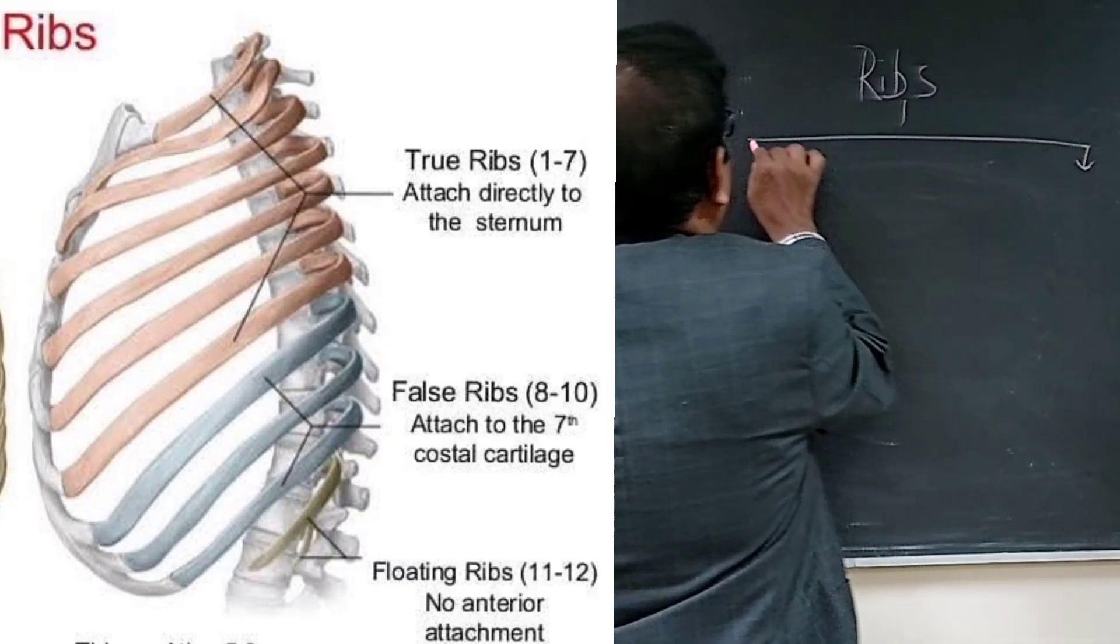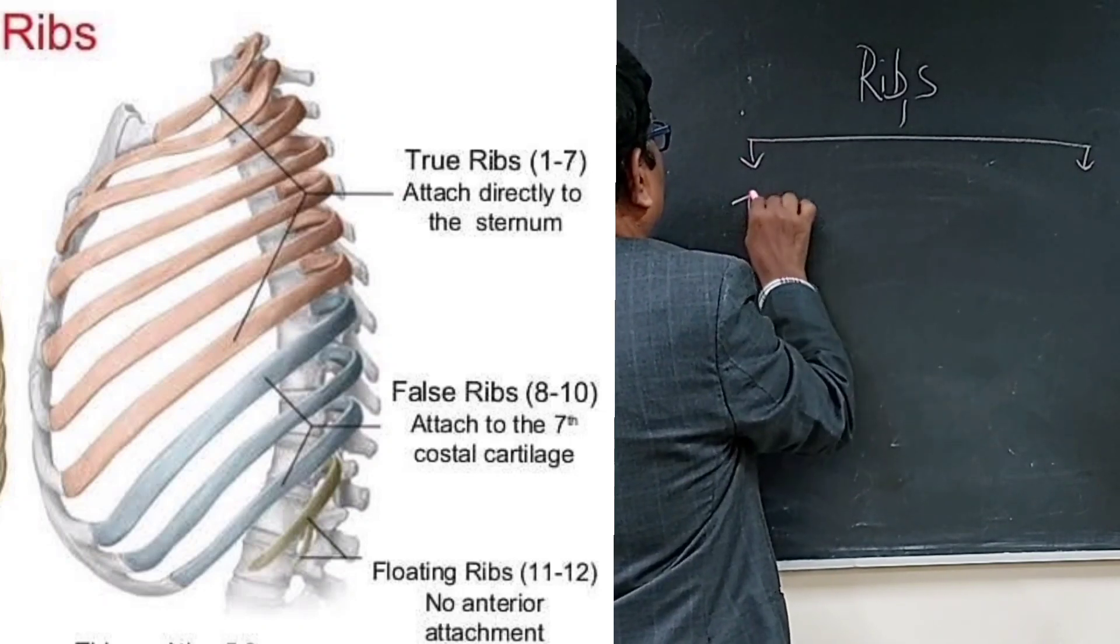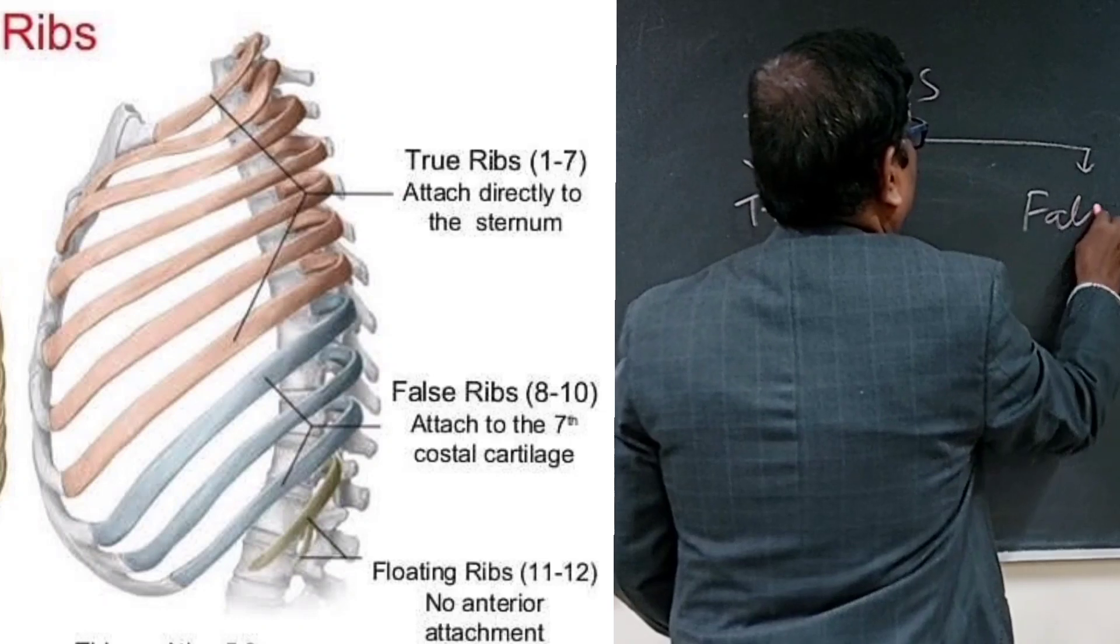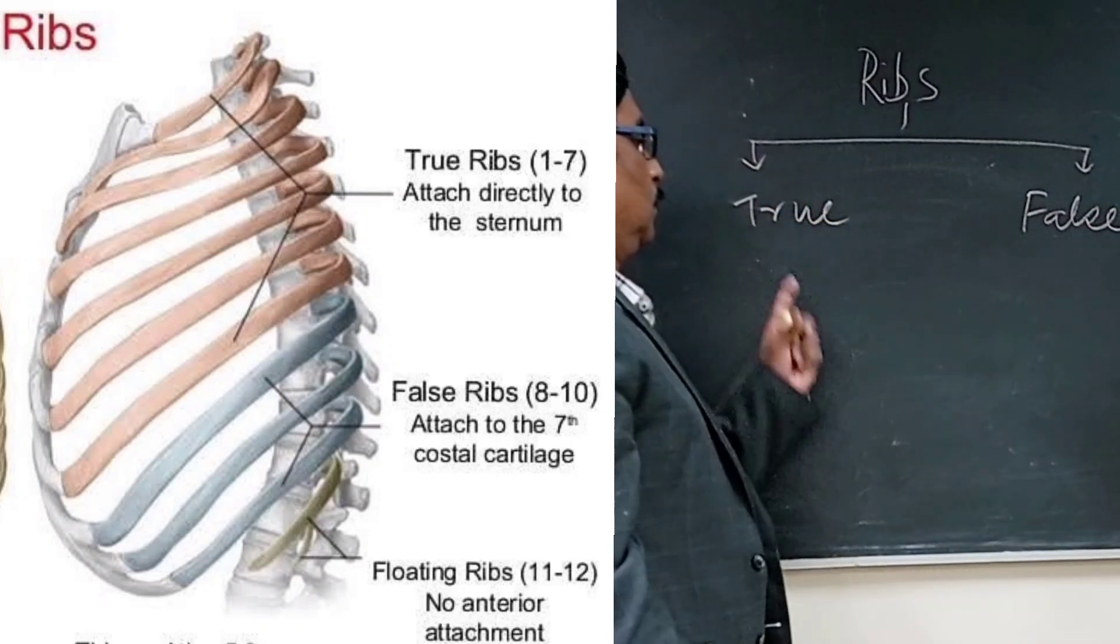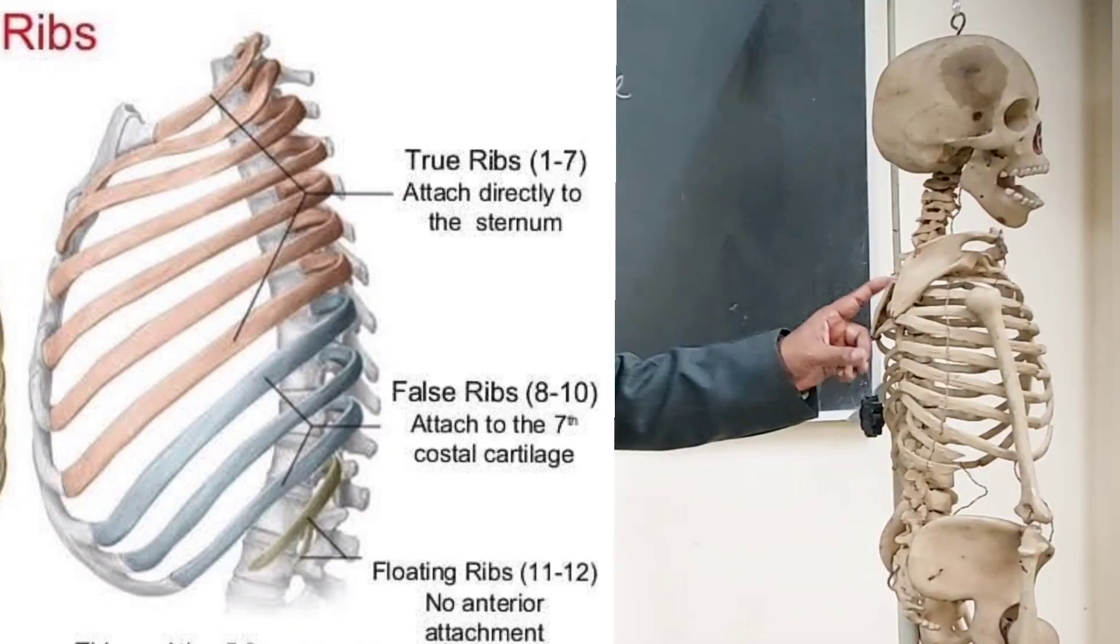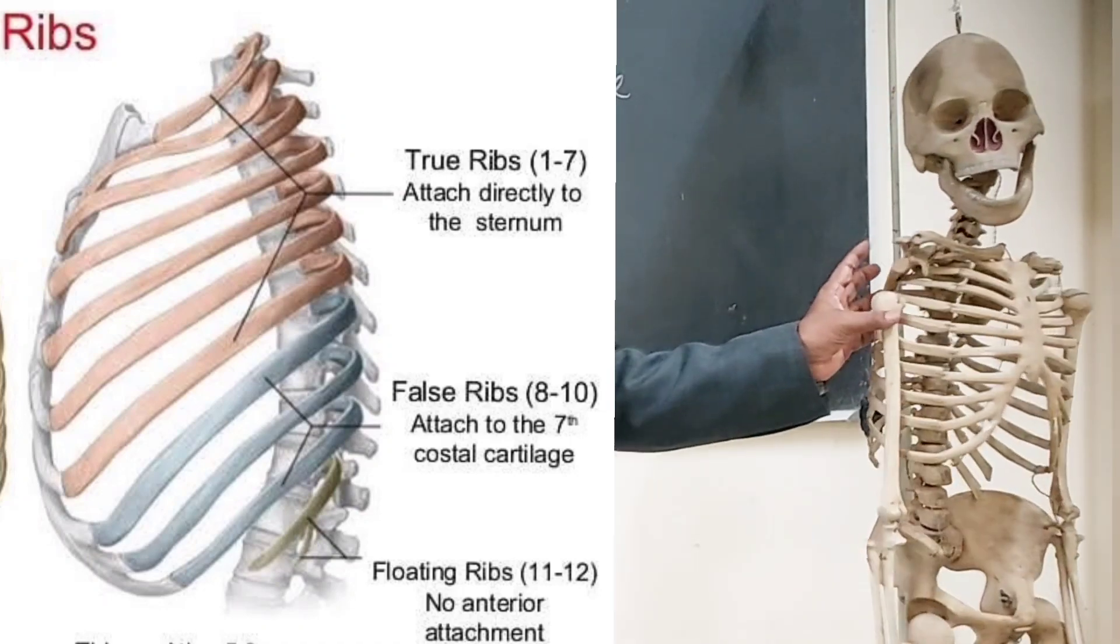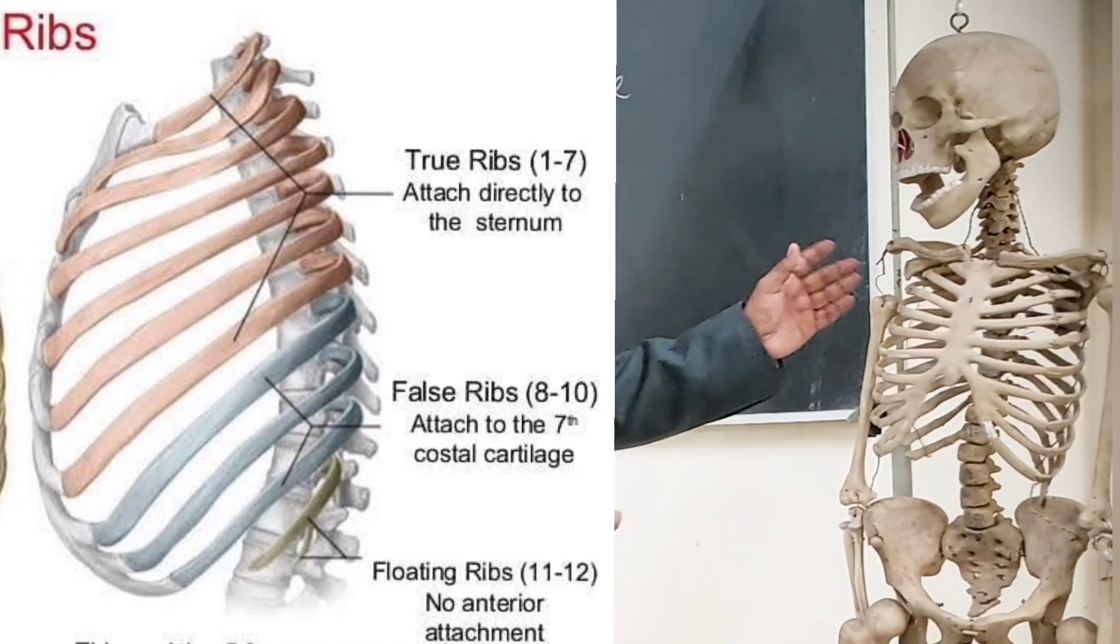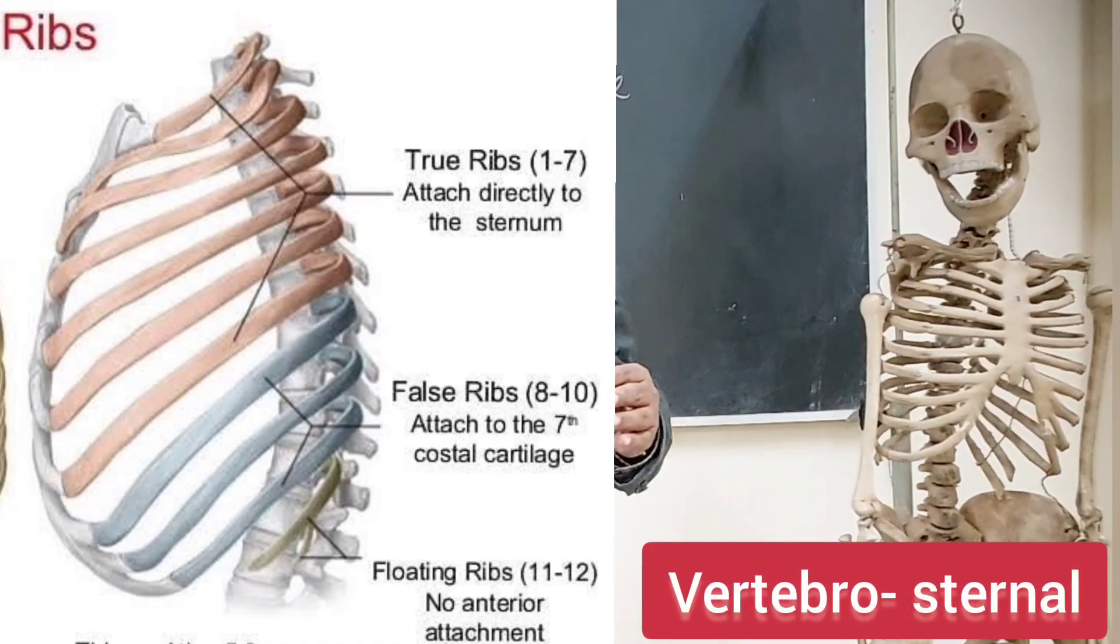One group is called the true ribs, one group called false ribs. True ribs means when the ribs articulate posteriorly with the vertebra and anteriorly with the sternum, called vertebrosternal articulation.